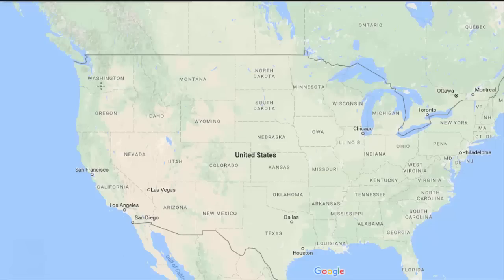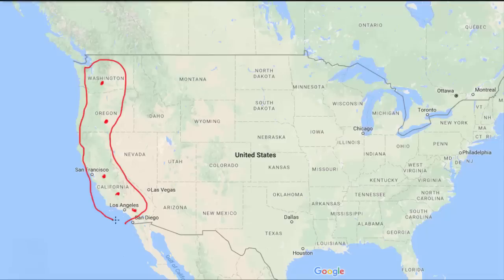The last region is the Pacific Coastal region, comprising the states of Washington, Oregon, California, San Francisco, and Los Angeles. To the left of it is the Pacific Ocean, which is why it is called the Pacific Coastal region.